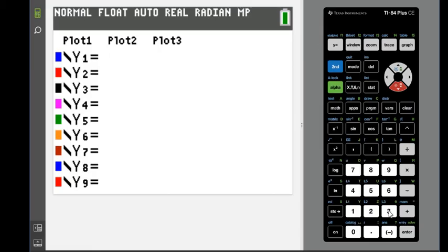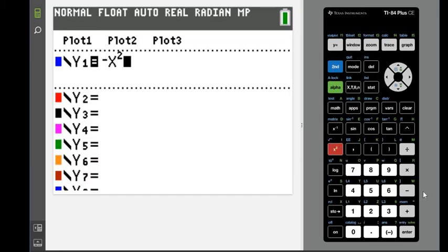And what we're going to do is we're going to enter in our equation. It was negative x, and for x we always use this button here, the x, t, theta, n button. We can hit the squared button, plus 6, and again we use the x, minus 2.